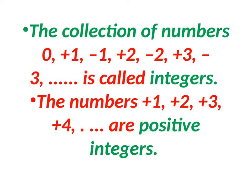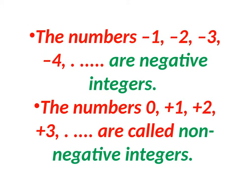Integers are collection of numbers: positive numbers, negative numbers and zero. Positive numbers are plus 1, plus 2, plus 3, plus 4 and so on. Negative numbers are minus 1, minus 2, minus 3 and so on. The non-negative integers are 0, plus 1, plus 2, plus 3 and so on.